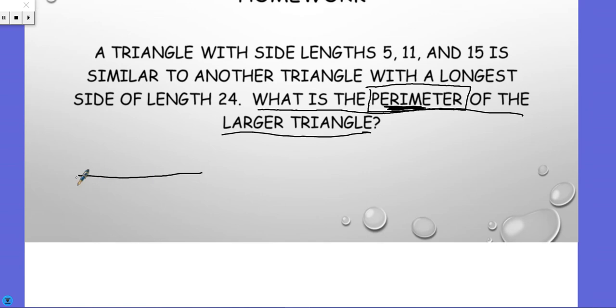I'm going to go ahead and draw what they said. I have a triangle and I get sides 5, 11, and 15. Since they didn't tell me any letters, I'm just going to write it randomly and call this A, B, C so I can keep up with things.